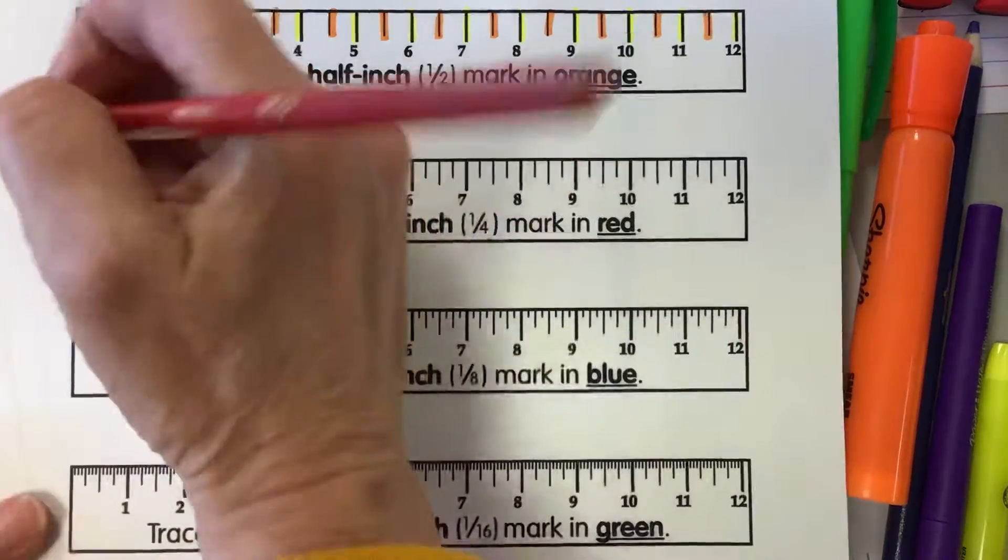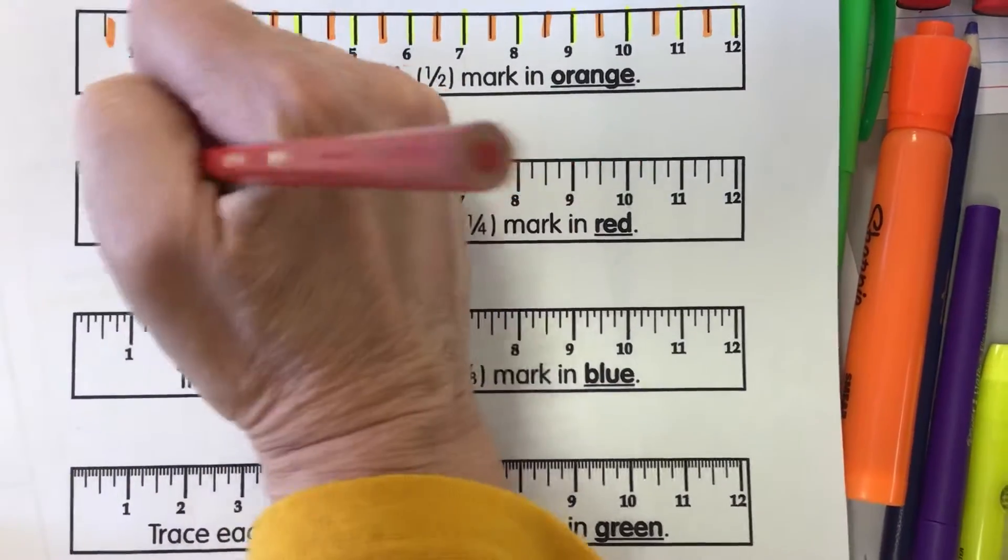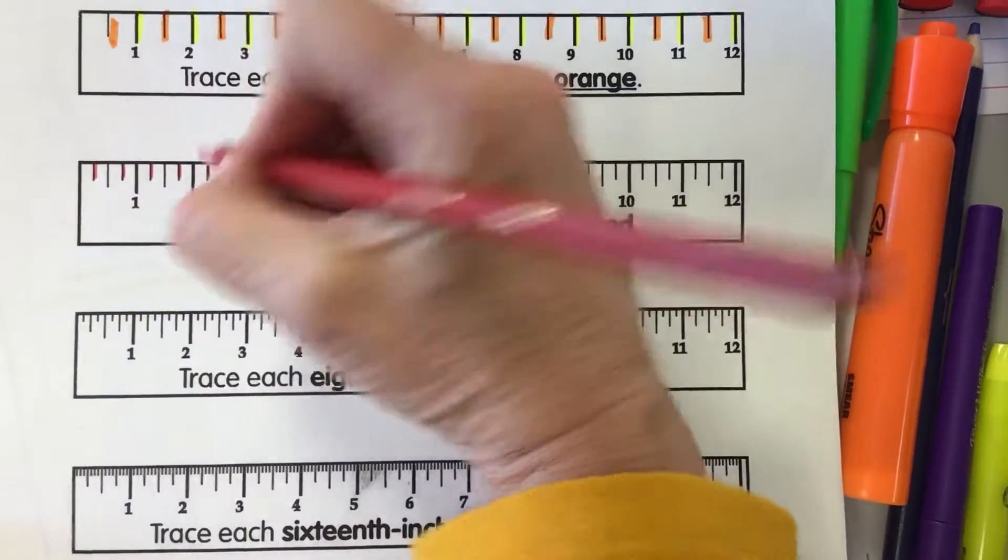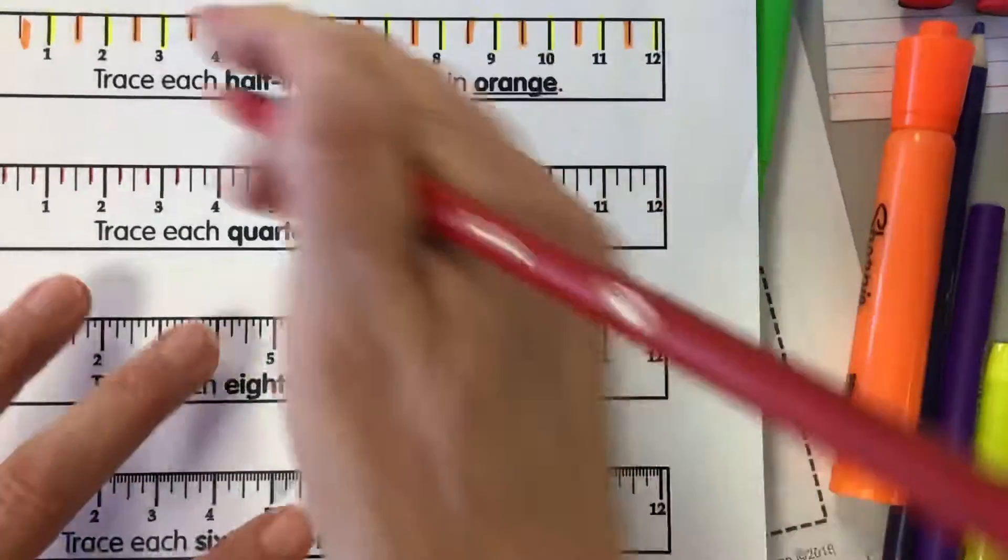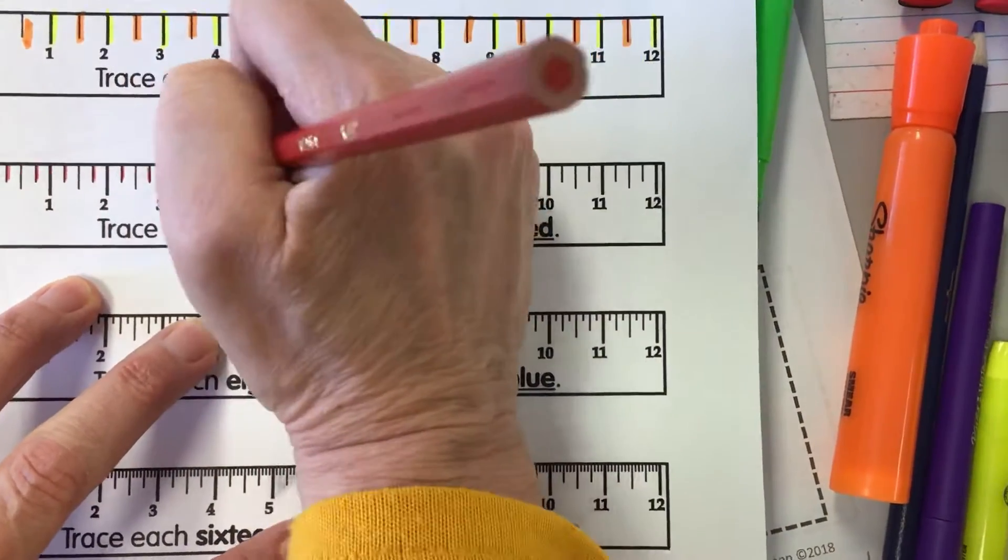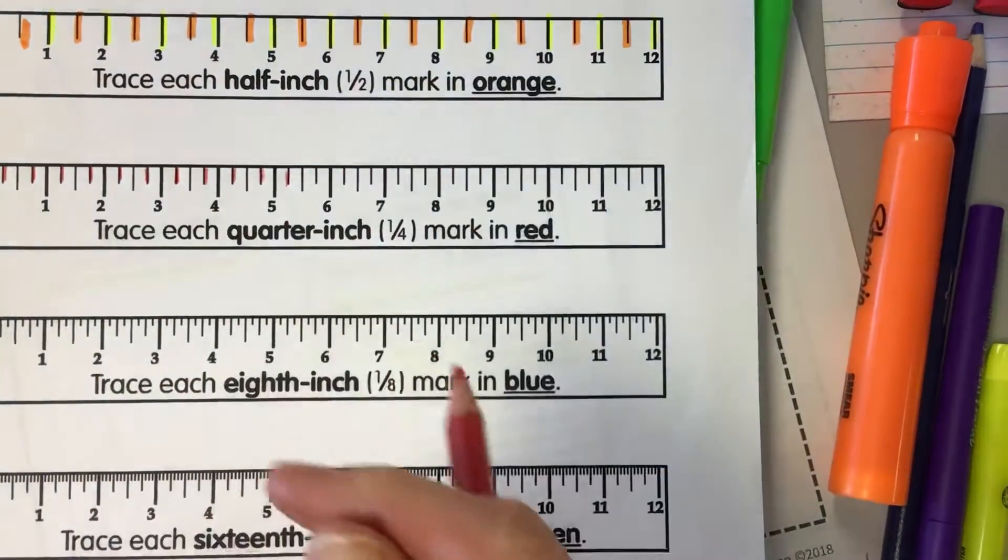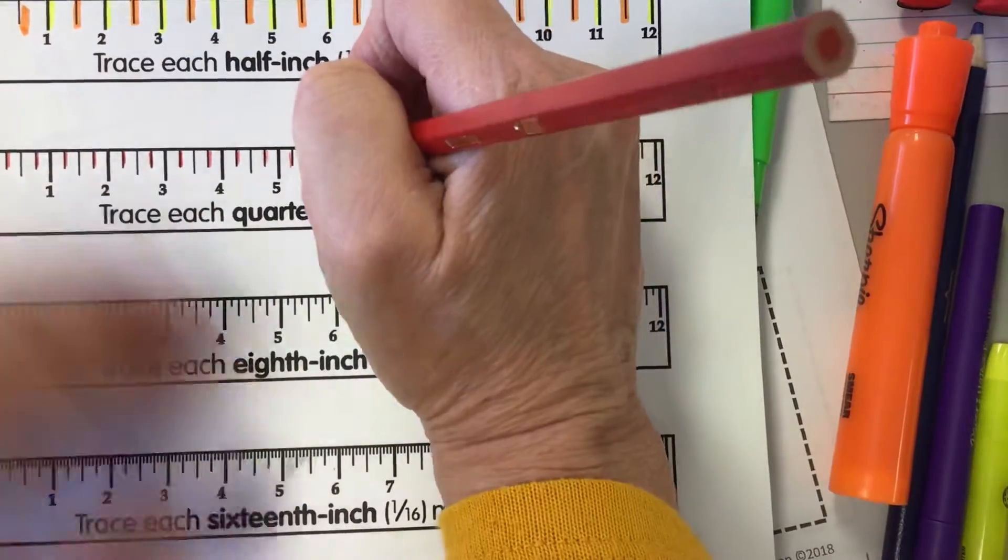Okay, so your job is to trace each quarter inch in red. Now I know that you guys really want to work ahead of me and you're going to go ahead and do all these in red and then you're going to quickly pick up your yellow or orange pencil and start doing all of those. But I want you to stop after you do these in red because I want to show you something.